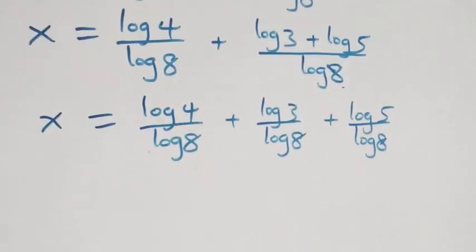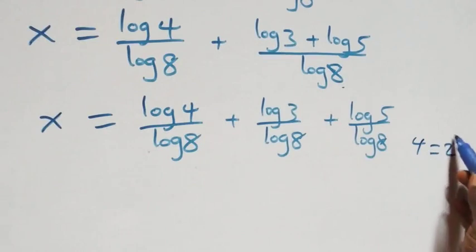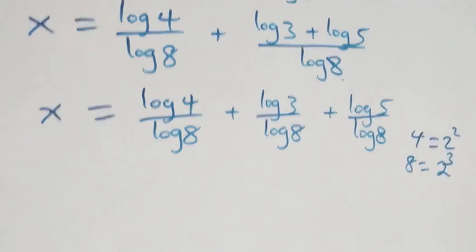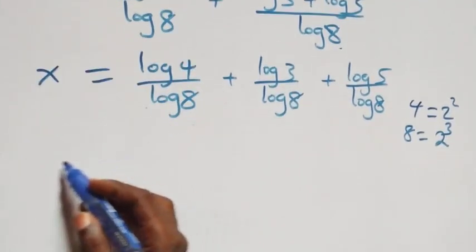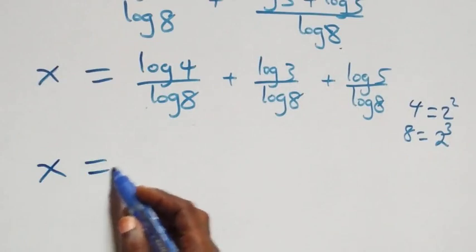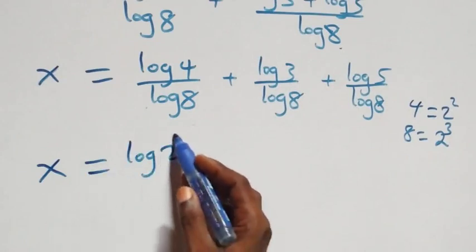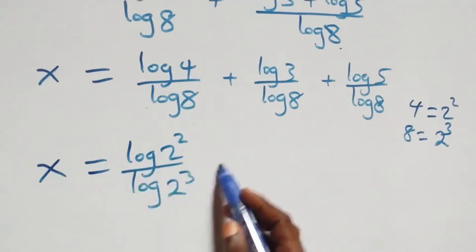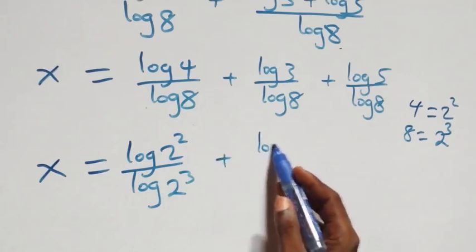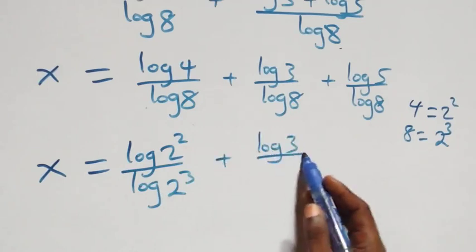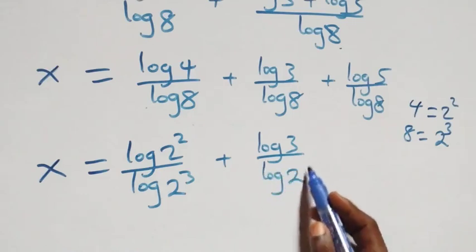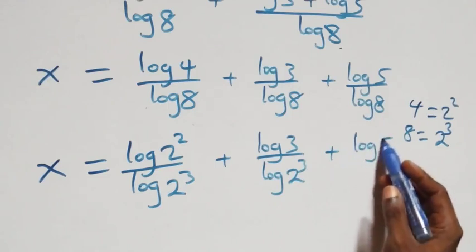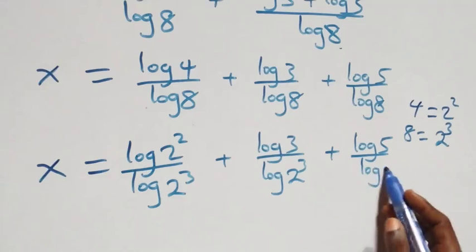Four can be expressed as two times two, which is two squared, and eight as two times two times two, which is two raised to power three. So x equals to log two squared over log two raised to power three, plus log three over log two raised to power three, plus log five over log two raised to power three.